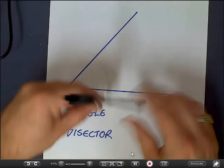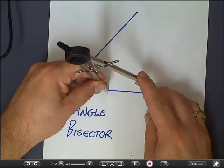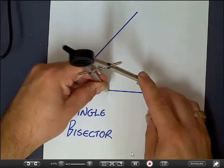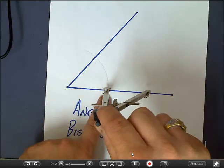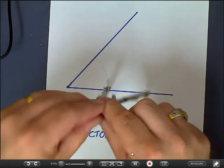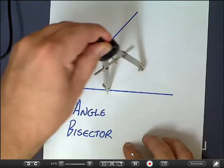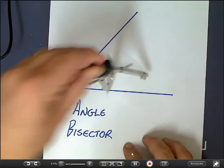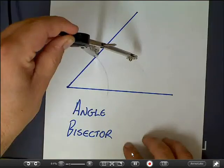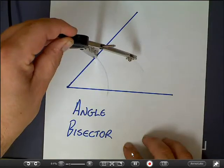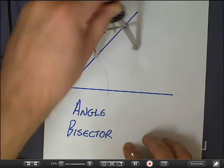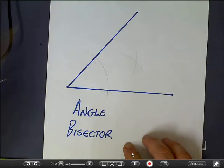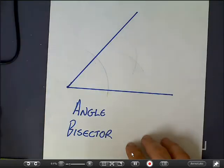With the compass set the same exact way, we put the point right where the arc intersects the angle — right where the arc we just made crosses the angle — we swing an arc from there, we swing that same arc from above in the same place, and what we get is an X. See the X there?